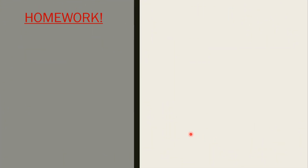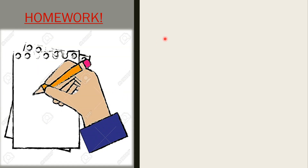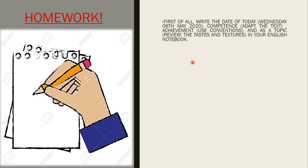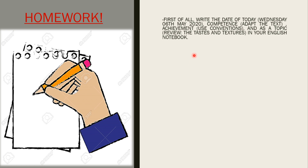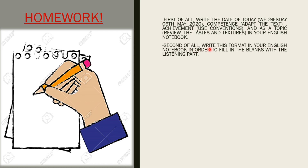Very good, guys. Now we have a homework. It's an activity in your notebook. First of all, write today's date: Wednesday, 6th May 2020. Write also the competence: Adapt the Taste. Write the achievement: Use Conventions. And as the topic or title, write: Review — the Taste Test and Texture Vocabulary. Write this in your English notebook.